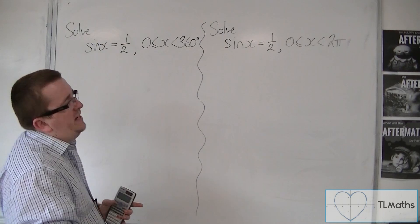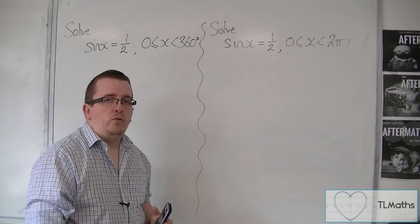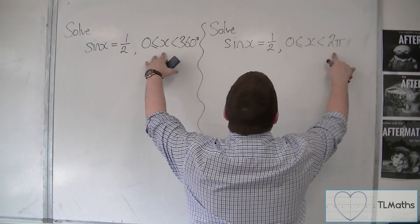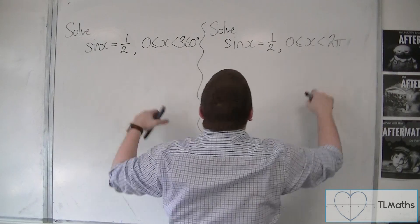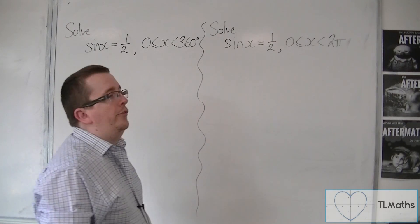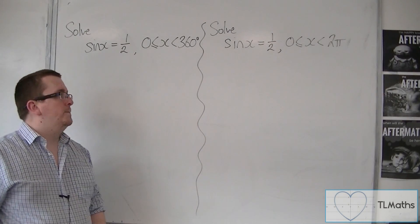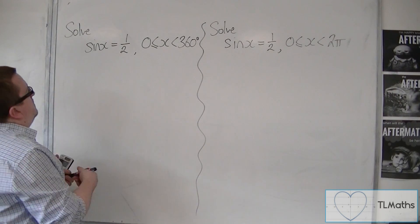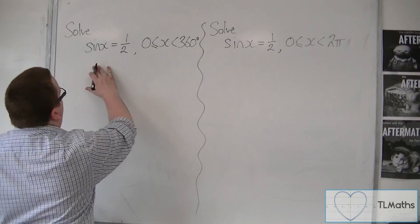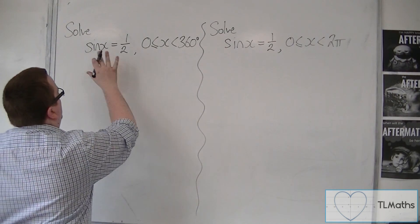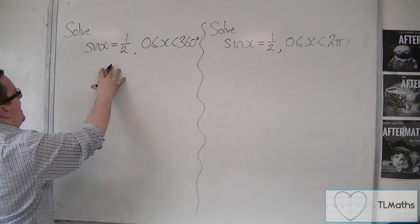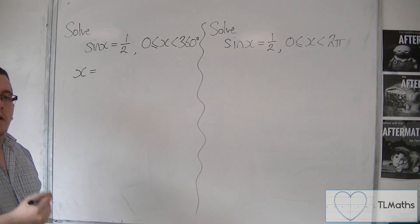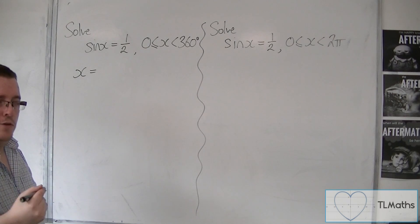You can tell whether you need to be in degrees or radians depending on the domain that you're looking at — which range of values we are solving it between. So, sine x equals one half. In order to get x, I need to use the inverse sine function on my calculator.